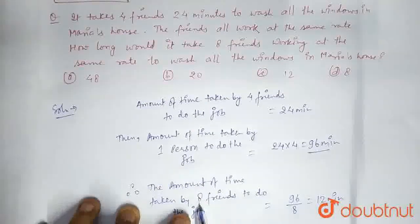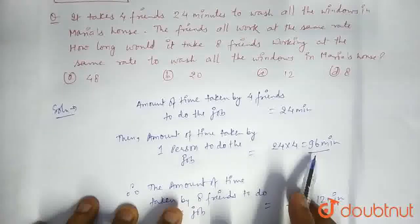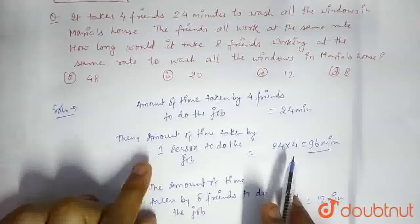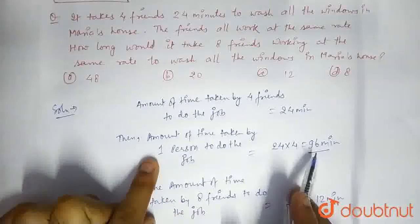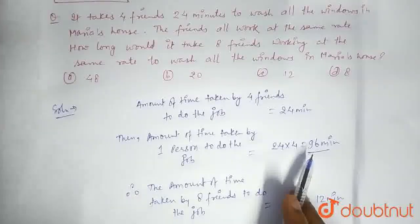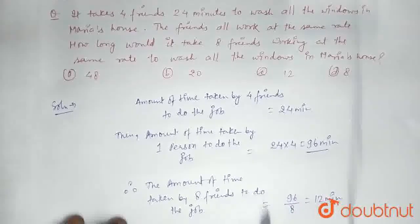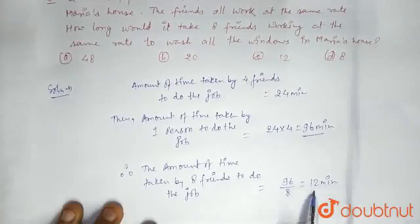So the amount of time that 8 friends would take would definitely be less than 96 minutes. As 1 person is able to do the job in 96 minutes, it is very obvious that 8 friends would take lesser time than the time taken by 1 person. So it's 96 by 8, that is 12 minutes.